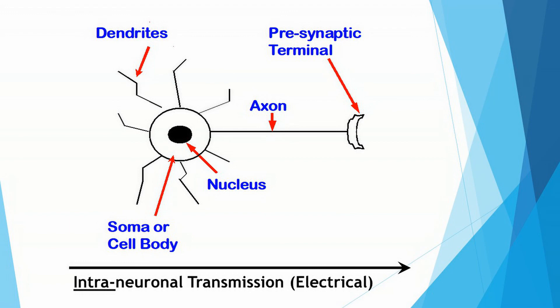So when we look at the bottom of the screen again, at the direction of intra-neuronal transmission and electrical signal traveling along the length of a single neuron, it begins at the dendrites and it ends at the presynaptic terminal.